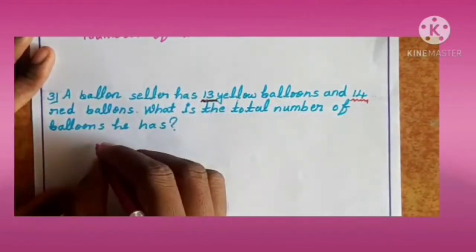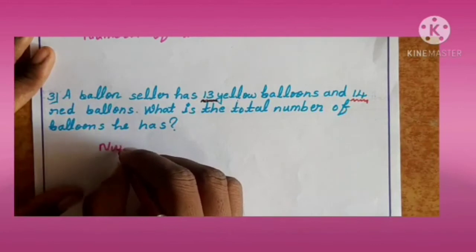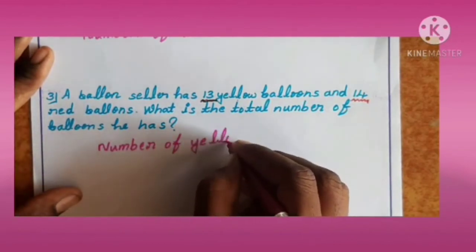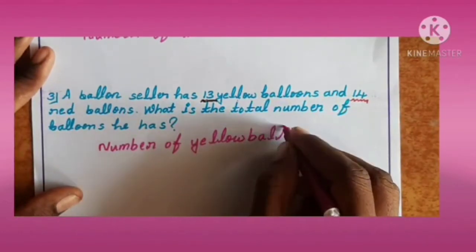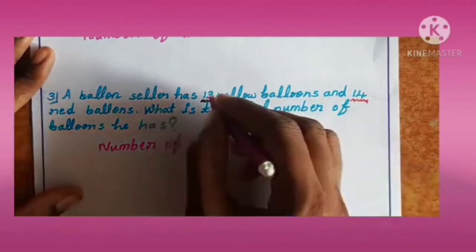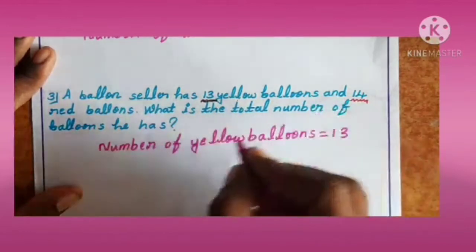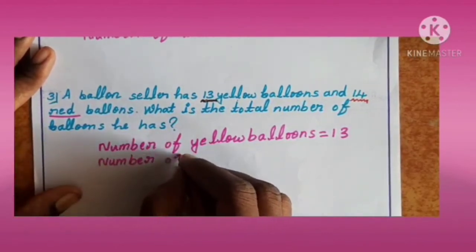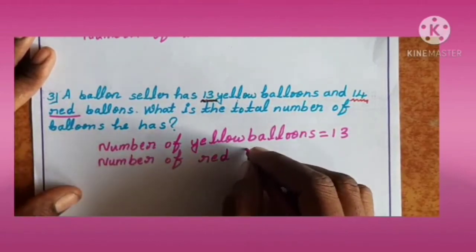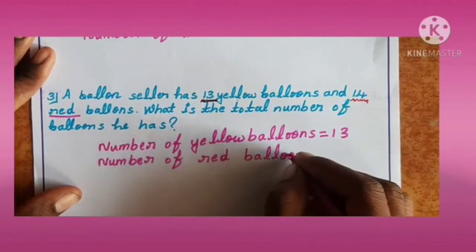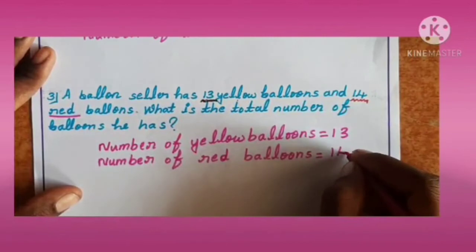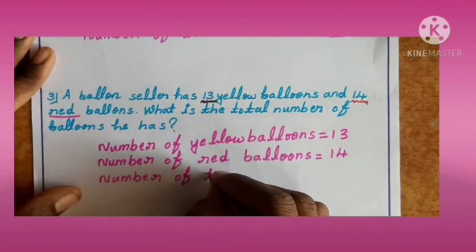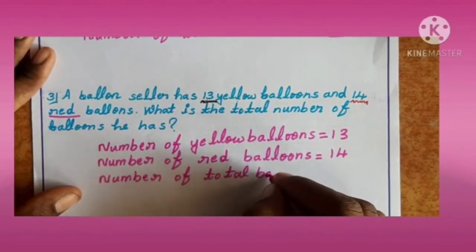First, write number of yellow balloons. Number of yellow balloons is 13. Next, number of red balloons is 14. Next, write number of total balloons.